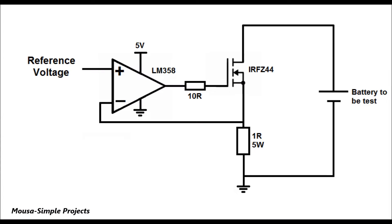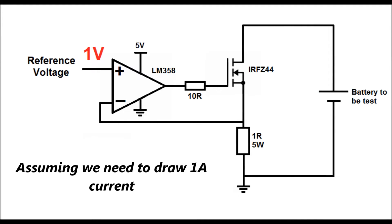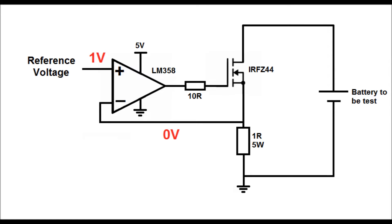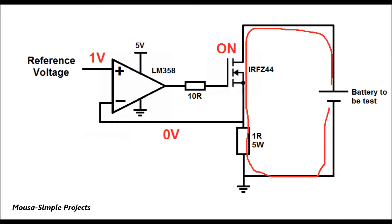This is the electronic load circuit using an op-amp. Here we have the battery or supercapacitor to be tested. When we run the circuit, the voltage on the non-inverting input is 1 volt, which is more than the voltage on the inverting input, so the output of the op-amp goes high and turns on the MOSFET. Current then starts flowing through the MOSFET and the resistor.